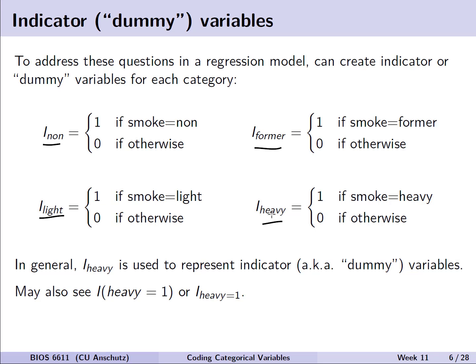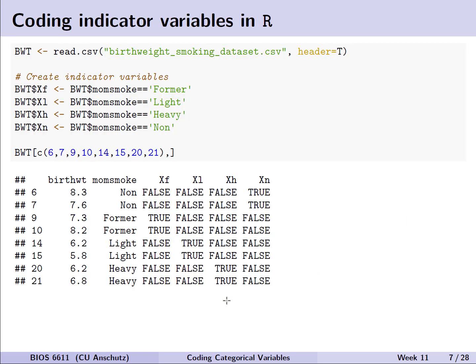Other ways you may see this represented include notation like i(heavy=1) or i sub heavy equals 1 to be more explicit. Within R, let's assume we read in this dataset and add these indicators to our data frame. Here we're seeing a subset of observations showing a few different combinations for non-smokers, former, light, and heavy smokers. For non-smokers, the indicator x sub n is true only for those non-smokers, with every other indicator set to false. Likewise, for former smokers, xf is true and the others are false. By knowing these indicator variables, we can identify which group each mother belongs to.